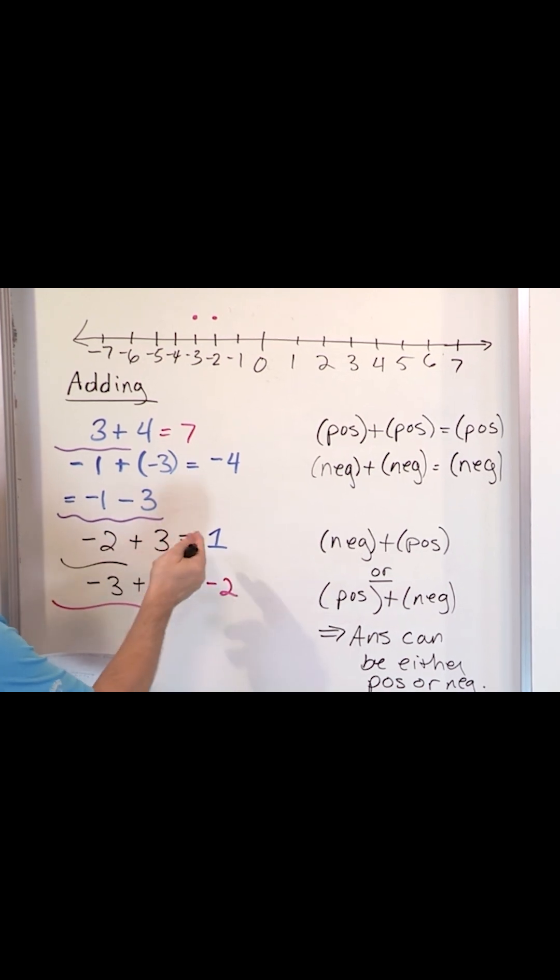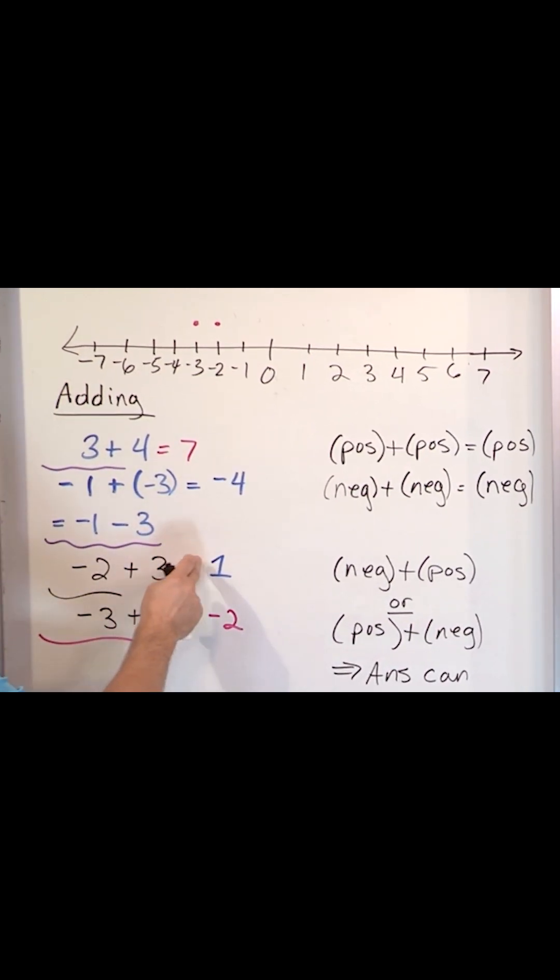So we take 3 minus 2 and we get 1. That's the number part of it. The sign of it always goes with the sign of whatever of these two numbers is bigger from an absolute value point of view. This is a positive 3, so this answer is a positive 1.